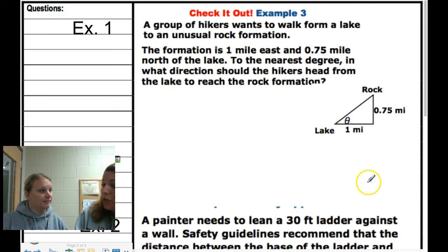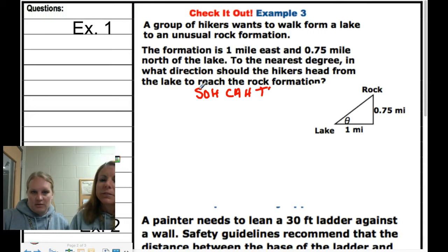We have to decide: are we going to use SOH, CAH, or TOA? Sine, cosine, or tangent. SOH-CAH-TOA. Let's label our sides. Here's our angle, so across from it is our opposite.